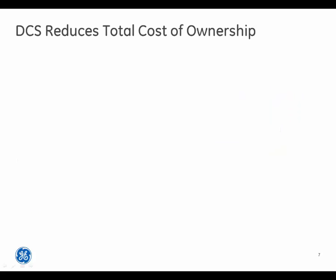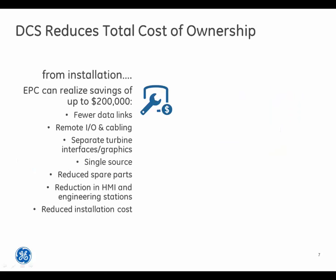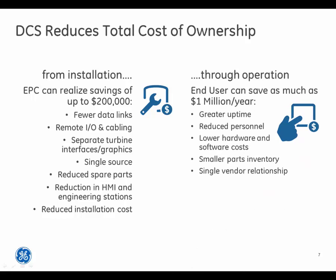To monetize the DCS solution, consider a large process system such as a power plant, where from installation an EPC can realize savings of up to $200,000, and through operation the end user can save as much as $1 million per year. The DCS solution reduces total cost of ownership.